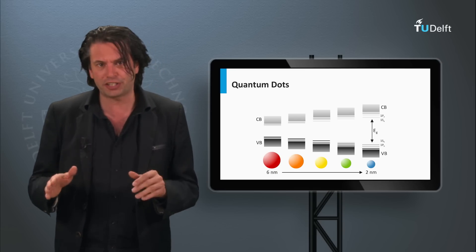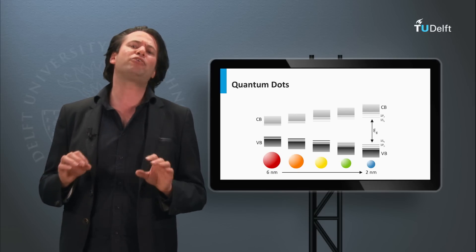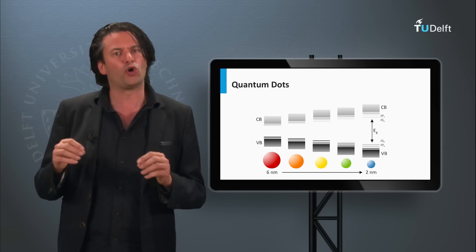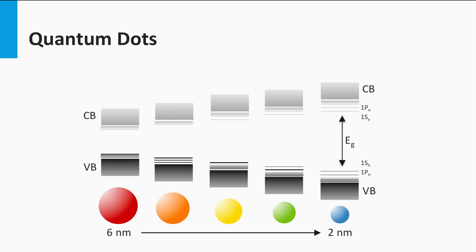Both for down-conversion and multiple exciton generation, nanostructured semiconductors are studied and developed. These structures are based on so-called quantum dots — small spherical nanoparticles made of semiconductor materials with typical diameters of a few nanometers. These semiconductor particles still behave like a semiconductor material. However, due to quantum mechanical effects, the bandgap can be larger compared to the bandgap of the semiconductor material in large bulk materials. The bandgap can be tuned by the size of the nanoparticles.